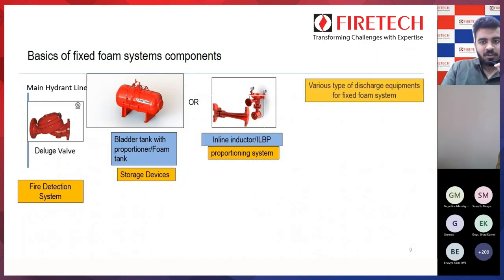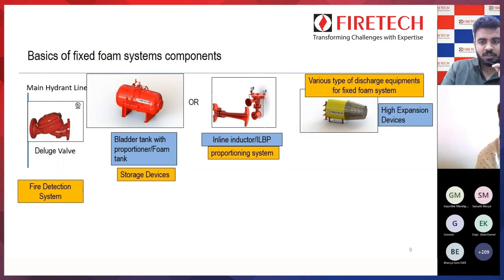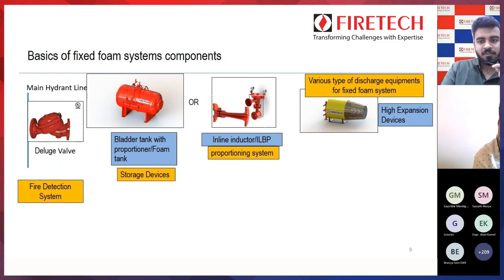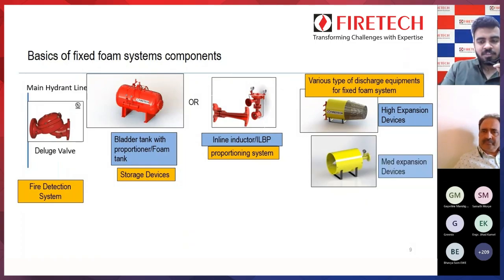Fourth is the discharge devices. You need to use various types of discharge devices for the fixed foam system. The first is high expansion foam generators, which are basically used in LPG fires — for spill fires. High expansion foam generators are used there. Second is the MBFG, which is used in the storage tank for dike protection.